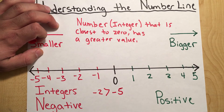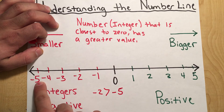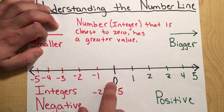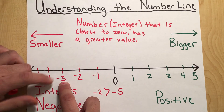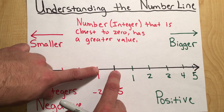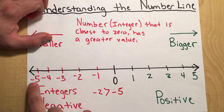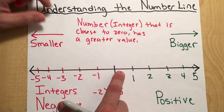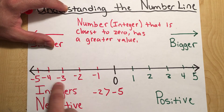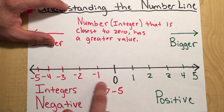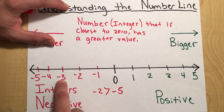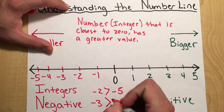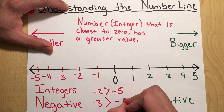Now let's compare negative three and negative five. Which one is closest to the number zero on the number line? Negative three is three units away from zero — one, two, three. And negative five is five units away — one, two, three, four, five. So the integer closest to zero is negative three. We can say that negative three, with this greater than sign, is greater than negative five.